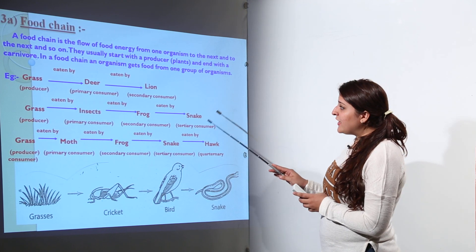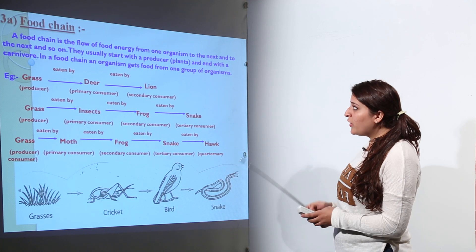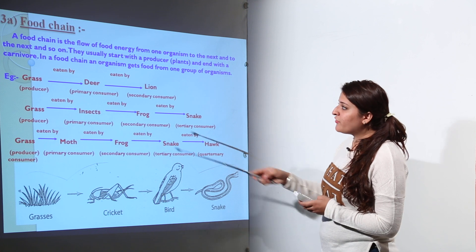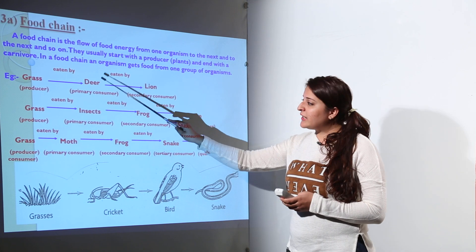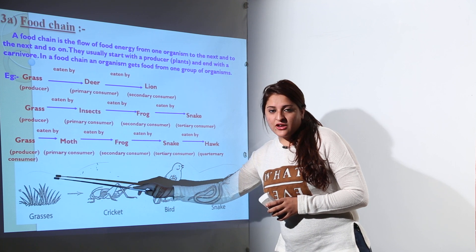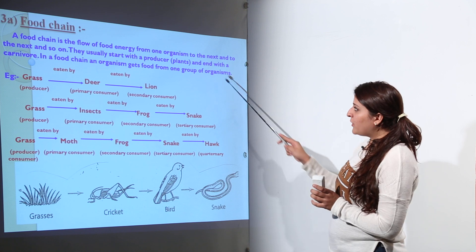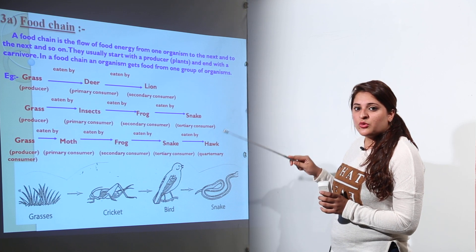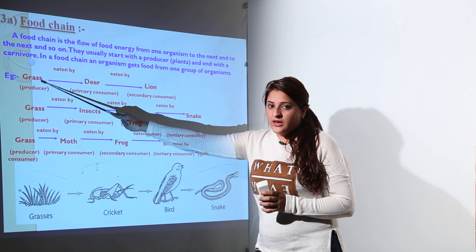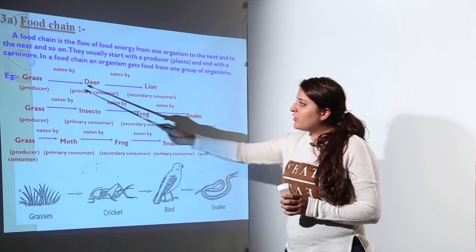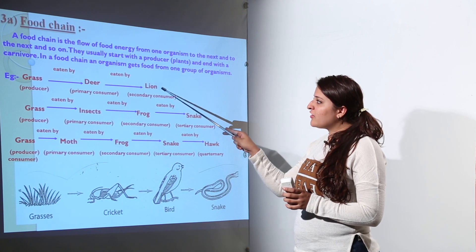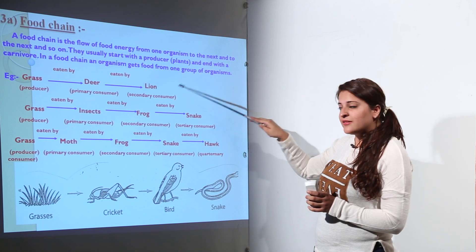What is a food chain? A food chain is a flow of food energy from one organism to another and so on — a sequence of energy transfer from one level to the next. It starts with a producer such as grass or any green plant. For example, grass is eaten by a deer, and the deer is eaten by a lion. Grass is the producer, deer is the primary consumer (a herbivore), and the lion is a carnivore feeding on the herbivore. This chain is known as the food chain.